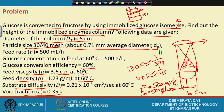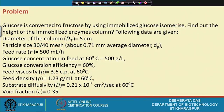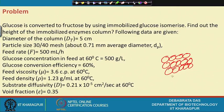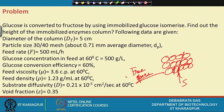Void fraction means the free space between the solid particles packed in the column. When the substrate in liquid form is passed through the column, it cannot penetrate the solid matrix; it travels only through these void spaces. A void fraction of 0.35 means 35% of the column volume is free space available for liquid flow.